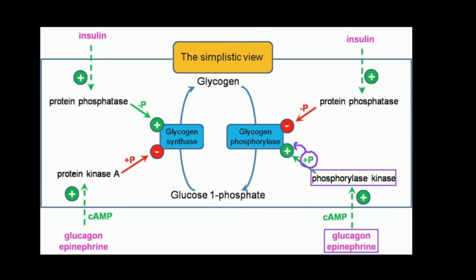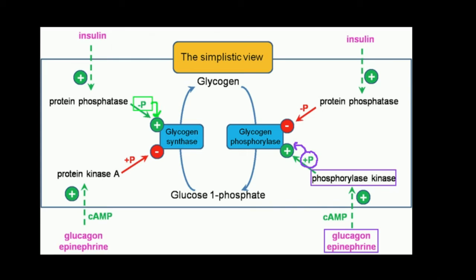Glycogen synthase is the enzyme that converts glucose 1-phosphate monomers into glycogen. It turns out glycogen synthase is more active when it's dephosphorylated — a different phosphorylation state. To dephosphorylate, you need phosphatases activated, and these tend to be activated by insulin. So while glucagon and epinephrine activate glycogen phosphorylase, insulin indirectly activates glycogen synthase by promoting glycogen synthase dephosphorylation, meaning the phosphate from glycogen synthase is removed, thus activating glycogen synthase.